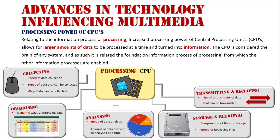The next one is transmitting and receiving — once again, the speed and amount of data that can be sent and received at a time. If we're talking about multimedia systems, let's look at gaming. When you're playing your online games, the fact that you're playing with people all over the world but it's seamless — that is the fact that your console or PC has a good processor inside that can read this data, put it up for display, you can respond as the user, and then it transmits it back to the networked game.